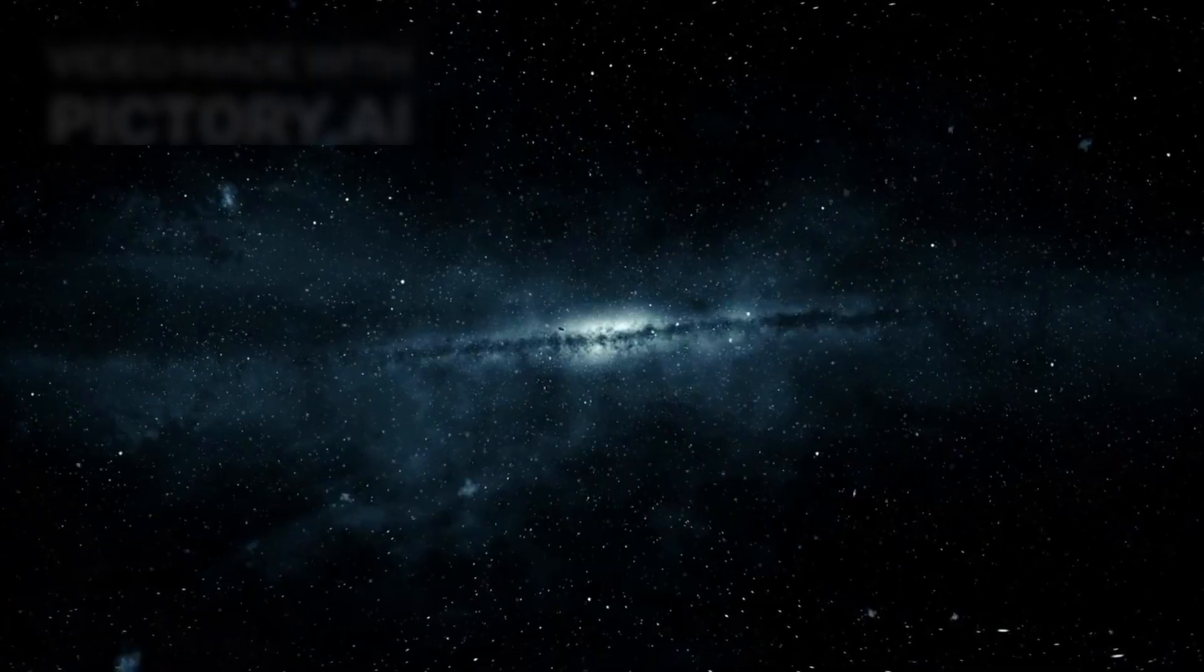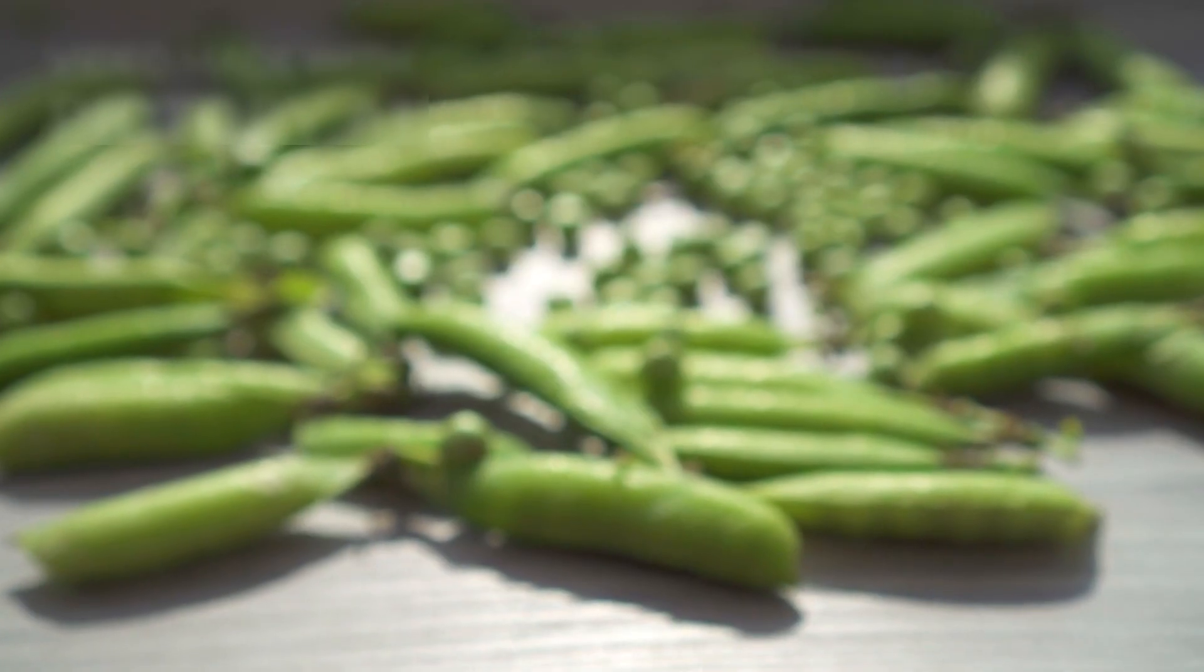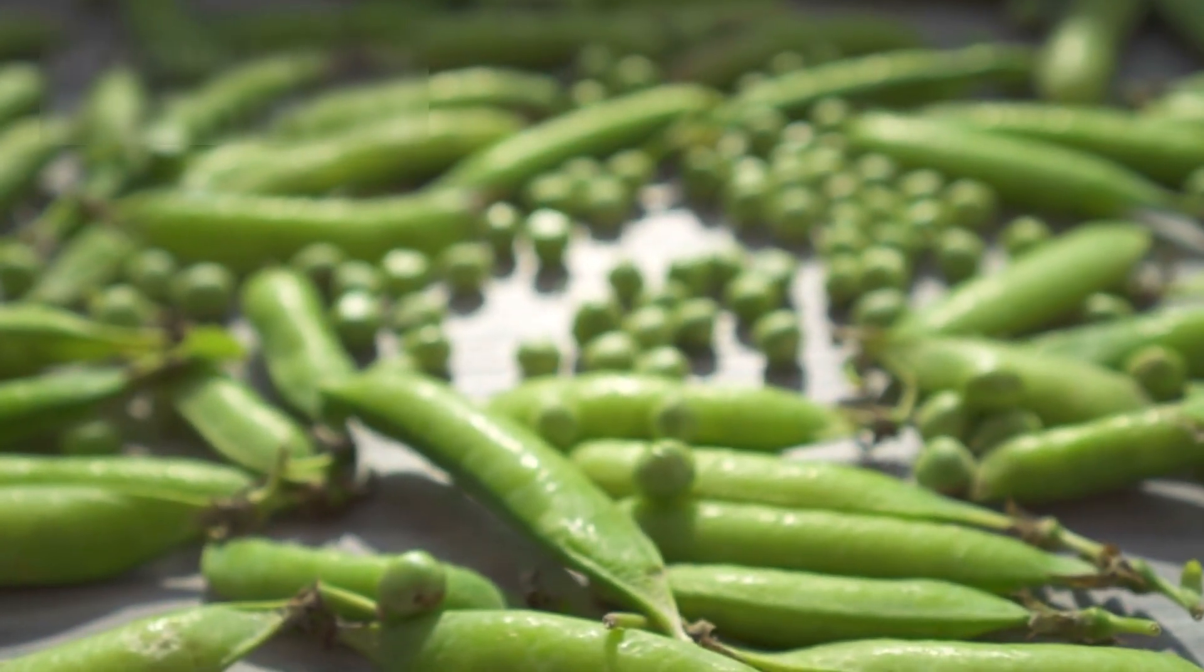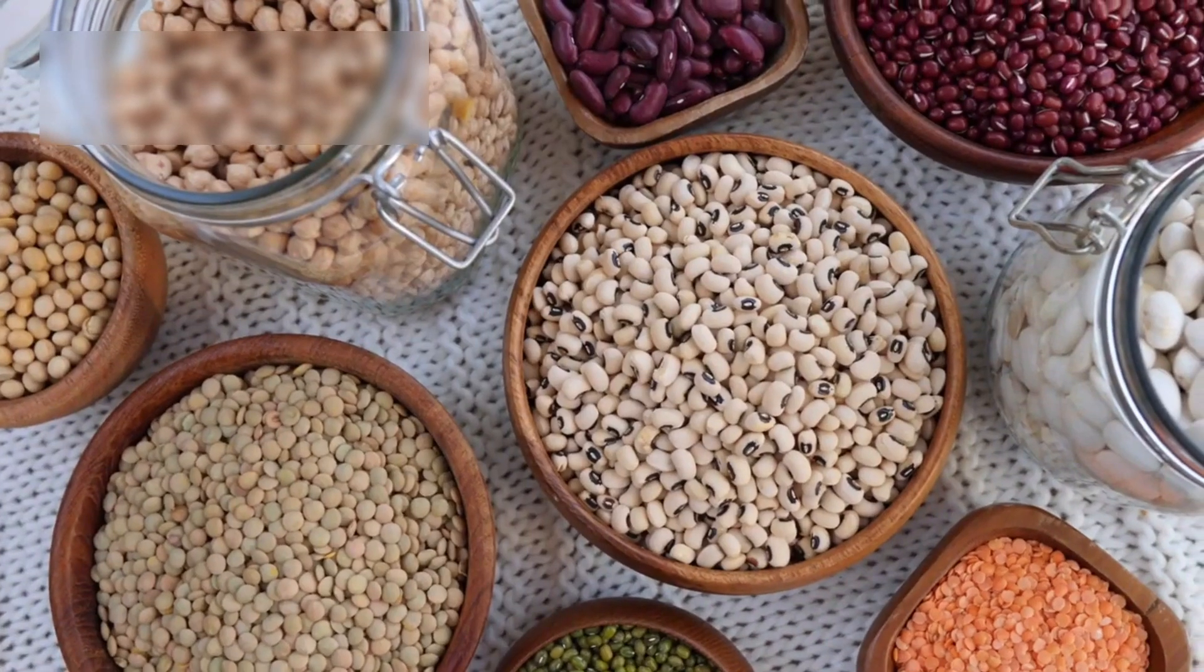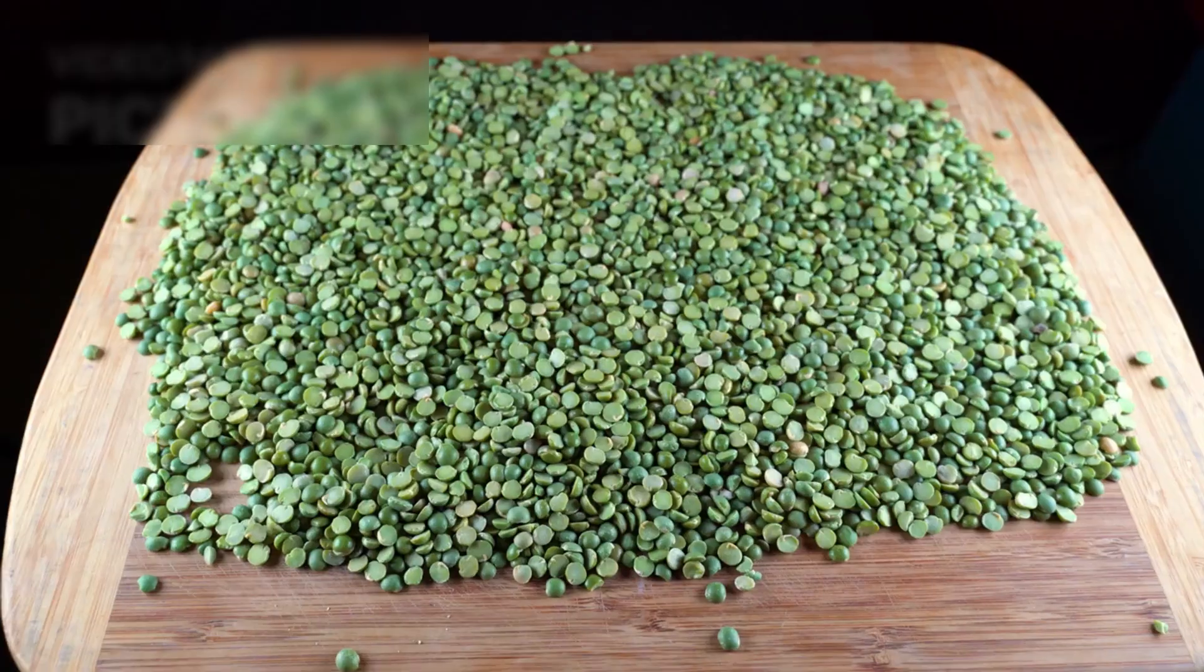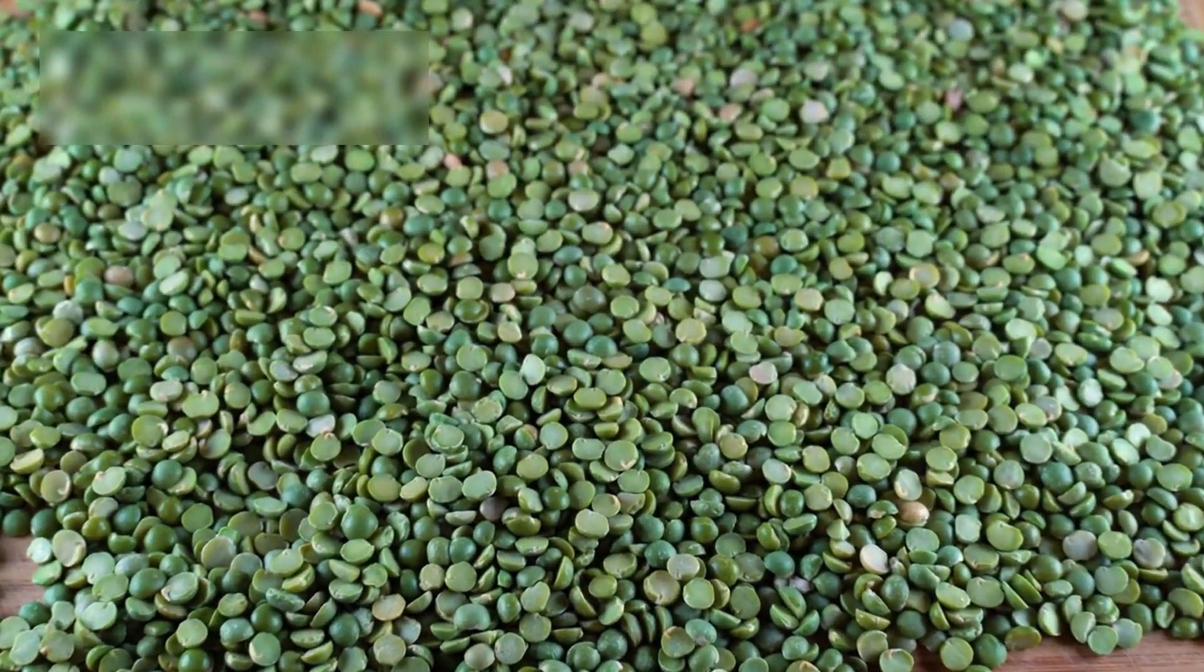Yet echoes remain. In the nearby universe, astronomers have found strange compact objects called green peas. They aren't identical, but they share unsettling similarities. Could they be the evolutionary cousins of the red dots? Are we seeing the same hidden process repeating in another form?